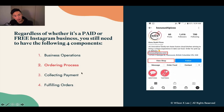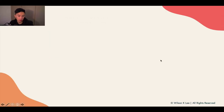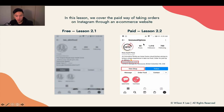Regardless of whether you're opting into the paid or completely free way of setting up your business, you still need the four components: business operations, ordering process, collecting payment, and fulfillment of your orders. Right now we're in process number two, the ordering process — specifically to set up the 'View Shop' button. This is Lesson 2.2. If you want the free option, go back to Lesson 2.1.